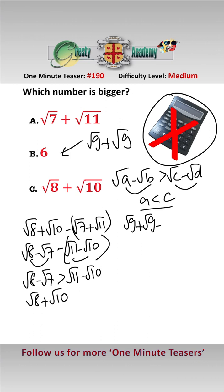Root 9 add root 9 minus root 8 add root 10. Let's see which one's the biggest. We rearrange that to be root 9 minus root 8 minus brackets root 10 minus root 9.